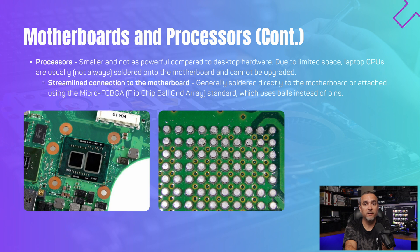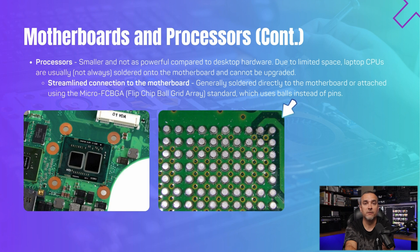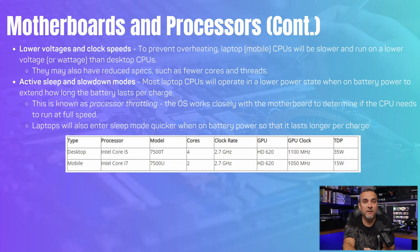Processors in laptops are typically smaller and less powerful than those found in desktops due to limited space, which often results in laptop CPUs being soldered onto the motherboard, making upgrades impossible in most cases. Laptop CPUs can be connected to the motherboard by being soldered or attached using micro FCBGA, or flip chip ball grid array, which uses balls instead of pins as shown here. To prevent overheating, laptop CPUs are designed to operate at lower voltages and clock speeds, which may also result in fewer cores and threads. Most laptop CPUs use active sleep and slowdown modes — a process known as processor throttling — where the OS works with the motherboard to regulate CPU speed based on usage, and laptops will automatically enter sleep mode faster when running on battery power.